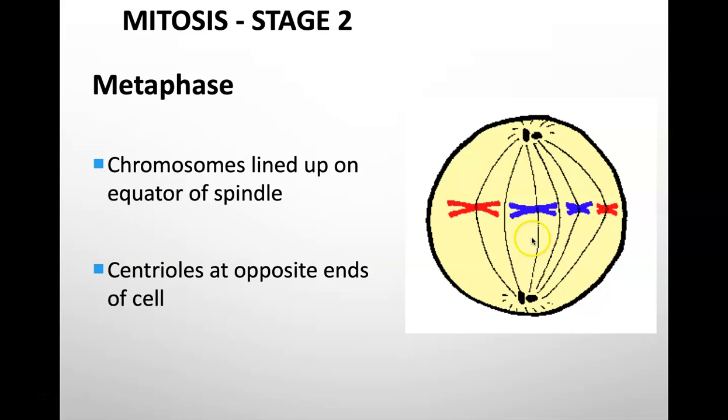So here in metaphase, meta, remember it means middle. So this is the easy phase to remember. All of the chromosomes, all the homologous chromosomes, line up in the middle of the cell. The spindle fibers attach at each centromere. And now we can see that the centrioles are at opposite ends of the cell.